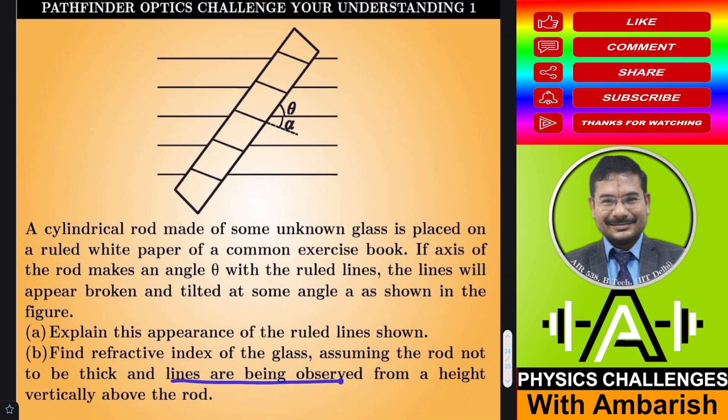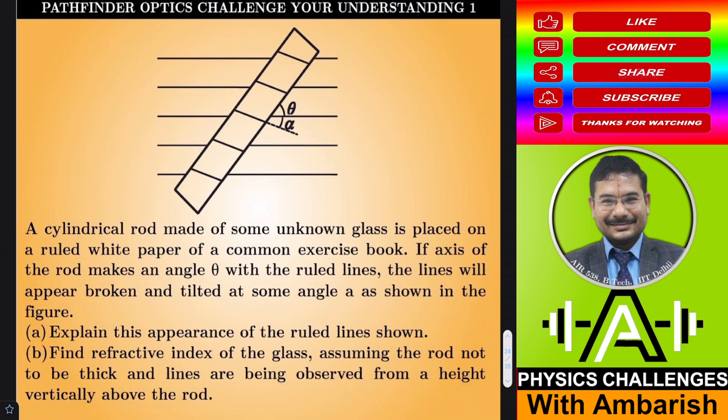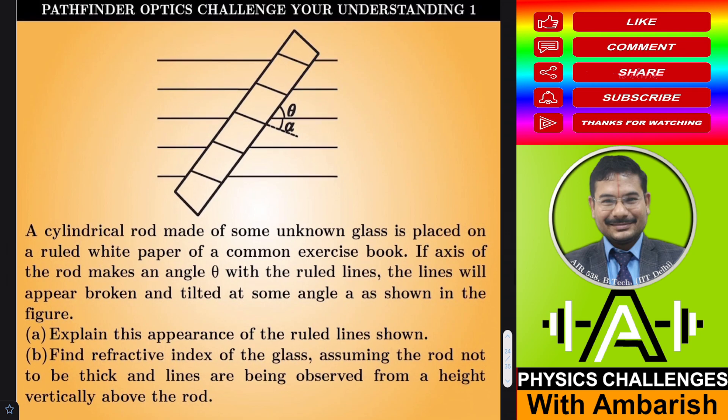The lines are being observed from a height vertically above the rod. We are seeing from vertically above the rod. You can imagine some set of parallel rays coming from the paper which are being processed through the glass rod. If you want, you can give it a try.